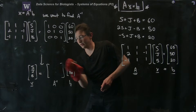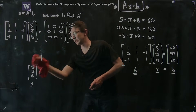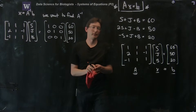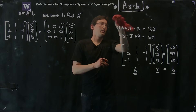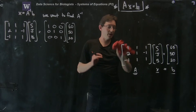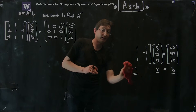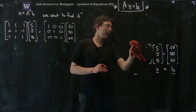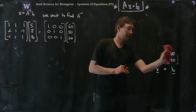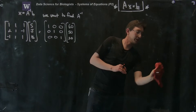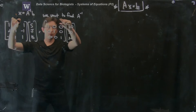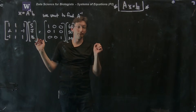This is probably going to take more than one board because there's a bit of math involved, but it's worth doing on a three-by-three system. The first step is to make the system on the left look like the identity. What we did before when it was just Sally and Bob is we subtracted two of the first row from the second row, and that's exactly what we're going to do again.